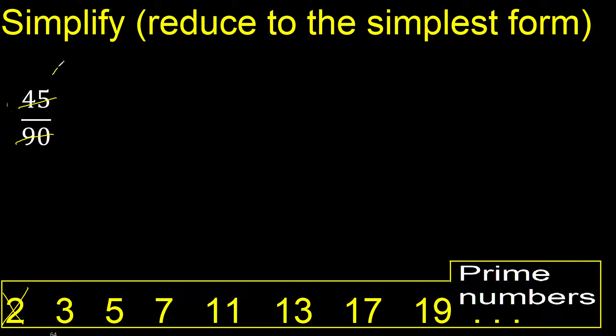45 divided by 3 is 15, and 90 divided by 3 is 30. 15 can be divided by 3: 15 divided by 3 is 5. 30 divided by 3 is 10.